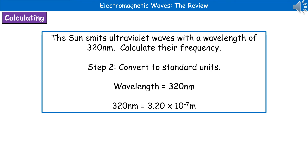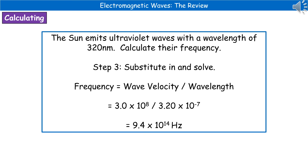Next, convert to standard units. Nanometers are not the standard unit of wavelength — that should be in meters. Converting 320 nanometers gives us 3.20 times 10 to the power of minus 7 meters. Then substitute into the equation and solve. Because we're calculating frequency, we rearrange to: frequency equals wave velocity divided by wavelength. So 3.0 times 10 to the 8 divided by 3.20 times 10 to the minus 7 gives us 9.4 times 10 to the power of 14. Because we've worked out a frequency, the unit is hertz (Hz).